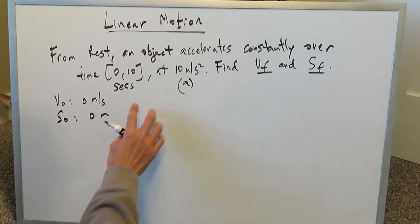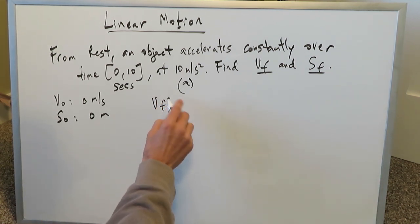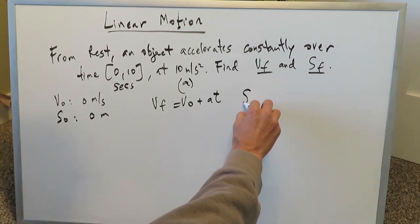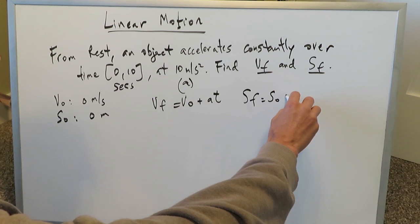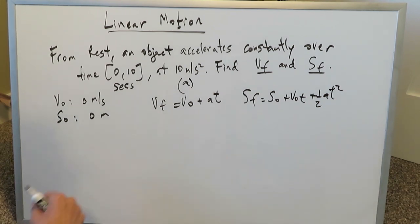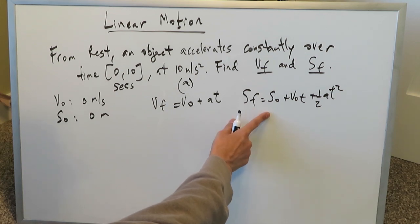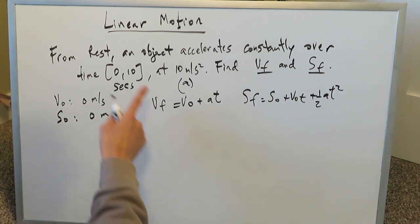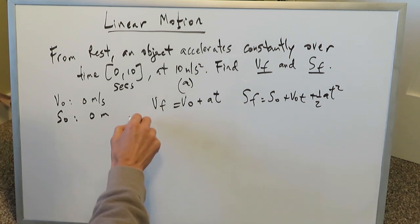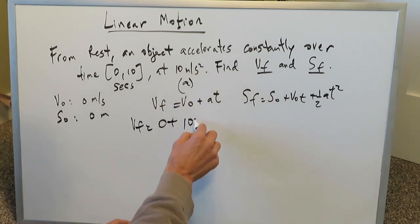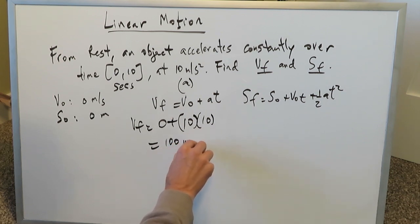Using the basic physics and algebra way: we know final velocity equals initial velocity plus acceleration times time, and final position equals initial position plus initial velocity times time plus half times a times t squared. Plugging in: final velocity equals 0 plus 10 times 10, which gives us 100 meters per second.